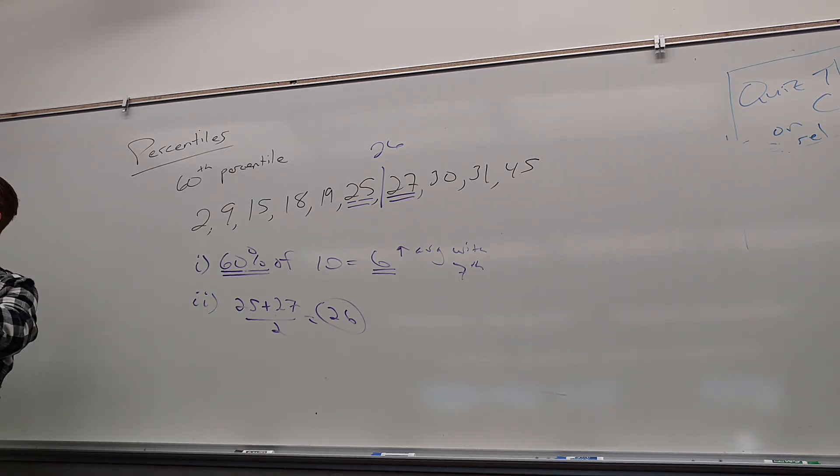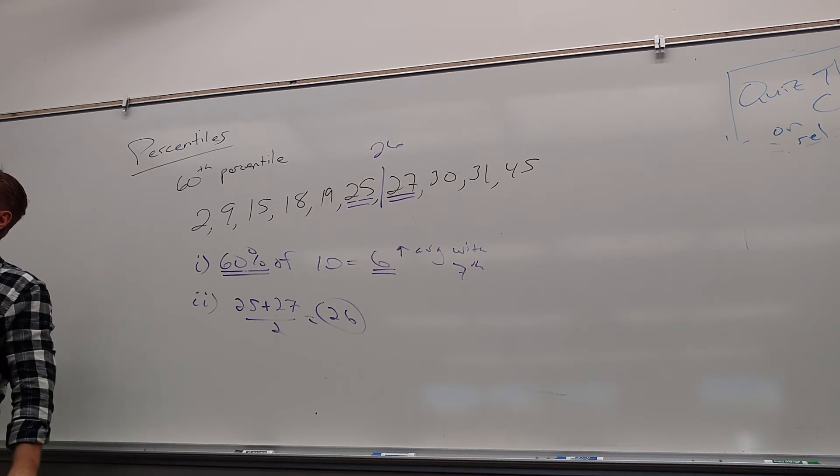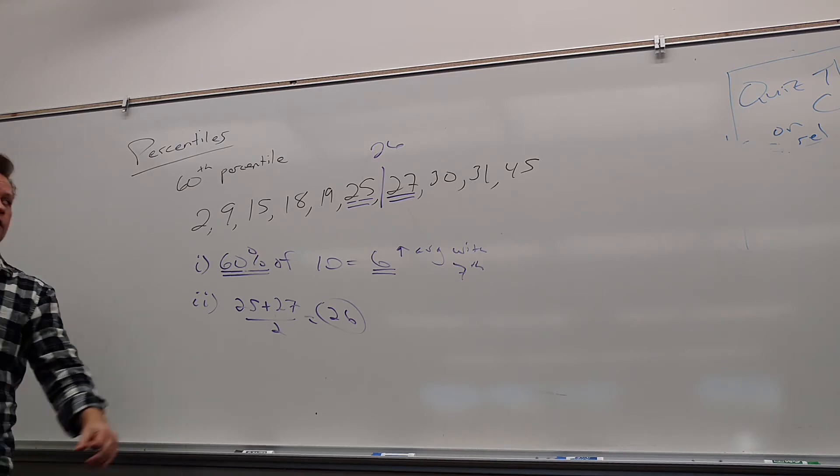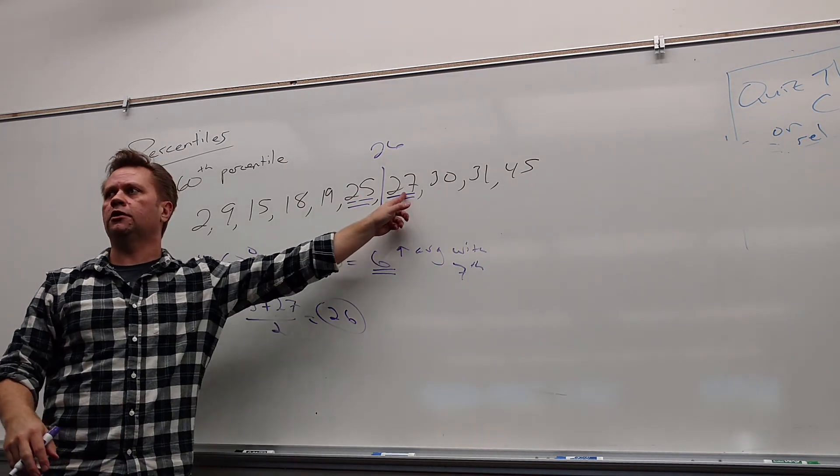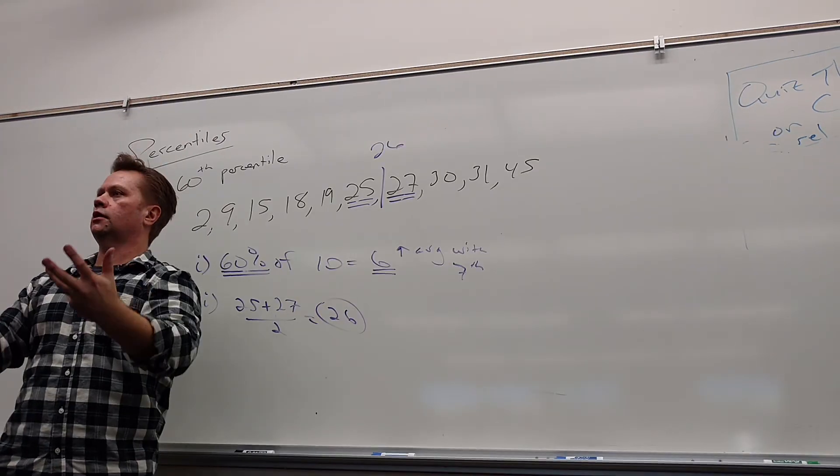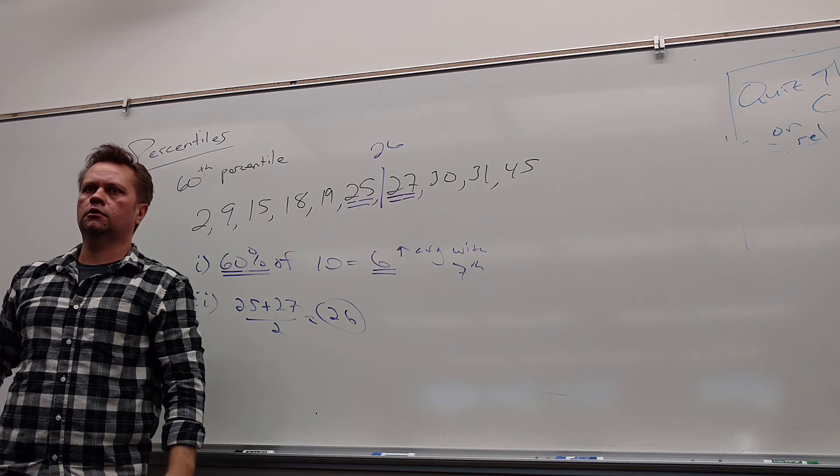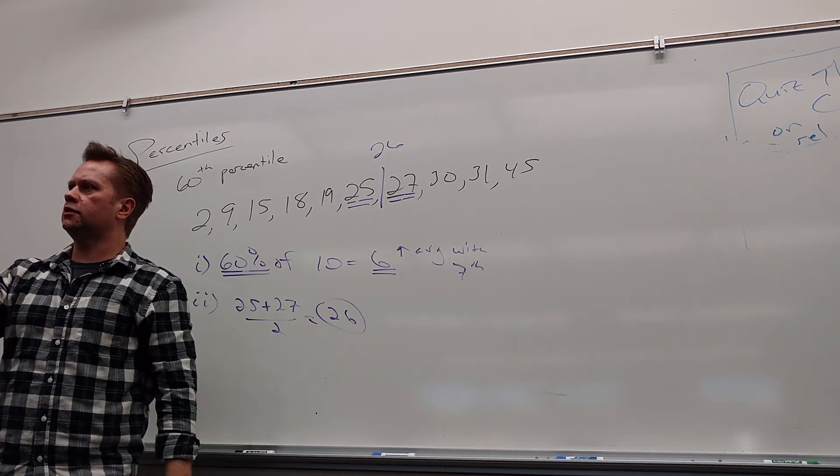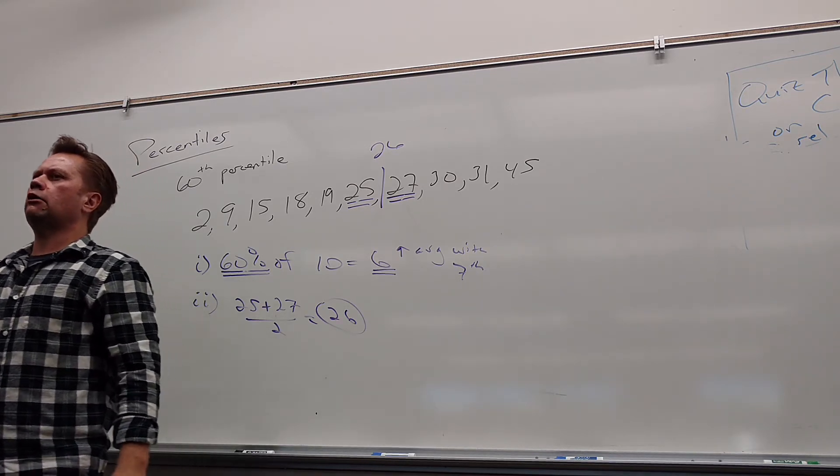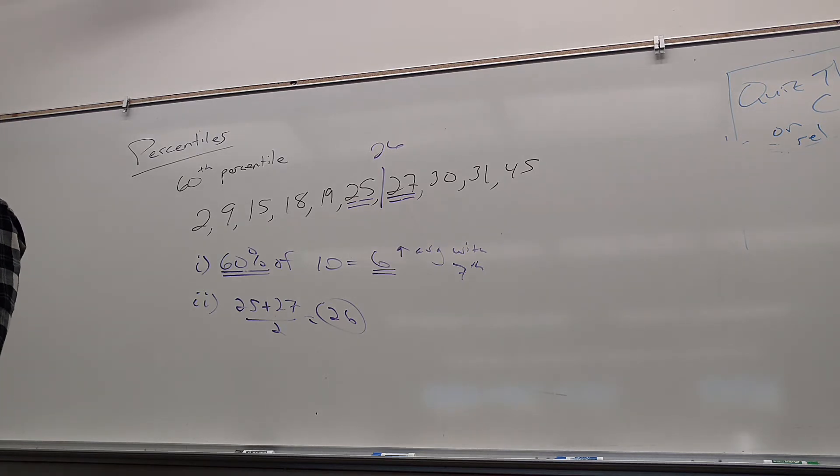But this is okay. 60% is six. So I came out to a whole number. So I averaged that with the seventh. And then the second step is to do that. What's the sixth number? 25. What's the seventh number? 27. Average those. You get 26. So that is the 60th percentile. Let me stop there for a second. Yes, ma'am. So if you had like a 25 and a 29, would you still do the same thing? Totally, yes.